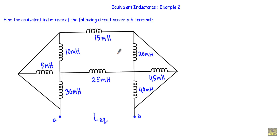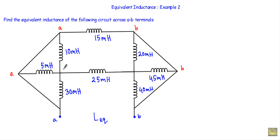Our point will continue as long as we don't encounter any inductor. This is our A point, and this will also be our A point. This is our B point, and our B point will continue up to this point. Let's say this is our C terminal and this is our D terminal.